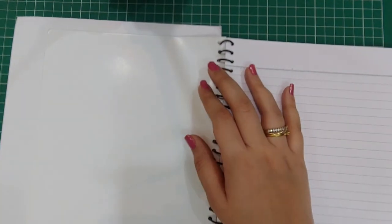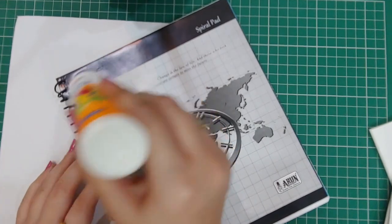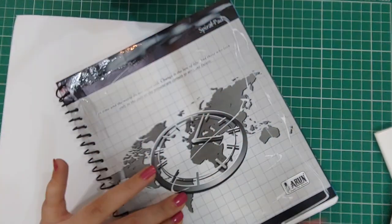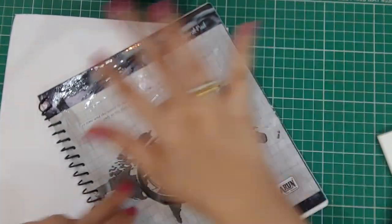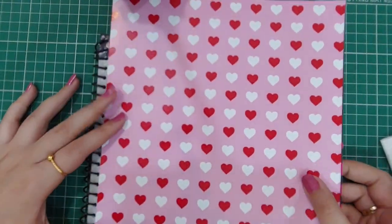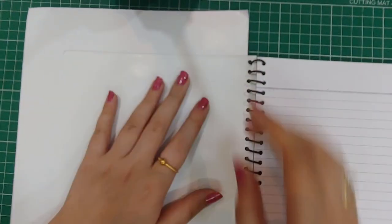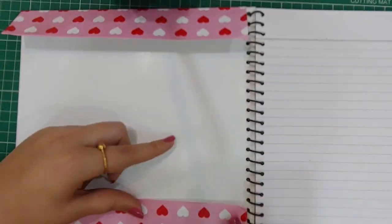Now for the second one I am using this designer A4 size sheet. Again I am measuring it, then just applying Fevicol on the cover of my notebook, spreading it using my finger, and then I will just stick the sheet onto the cover. I am going to fold the extra inside the notebook and I am going to just cover my notebook like we do usually.